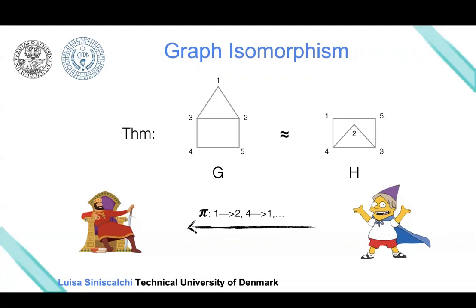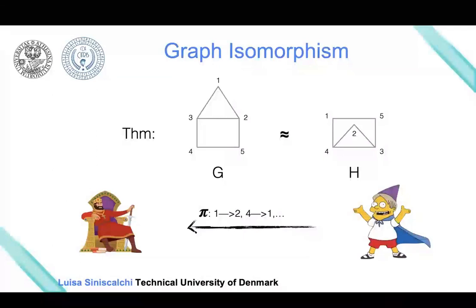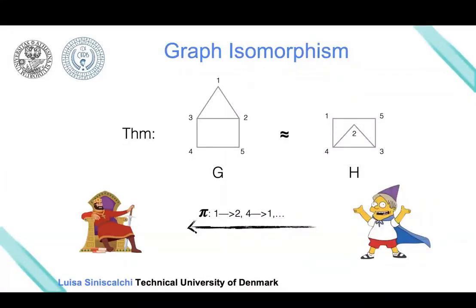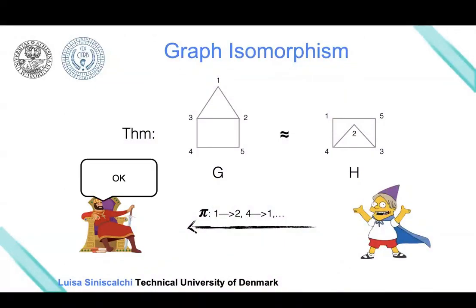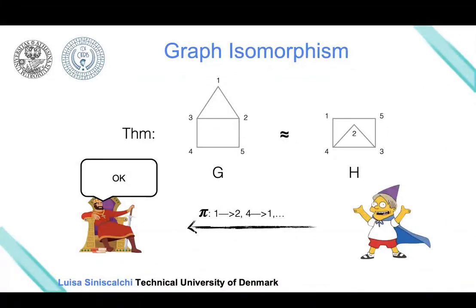The verifier can use this permutation, map each node in G to a node of H, and check if they are isomorphic. Since this check can be done in polynomial time, the verifier will accept or reject the proof in polynomial time. So we have a way to prove to a verifier that two graphs are isomorphic.